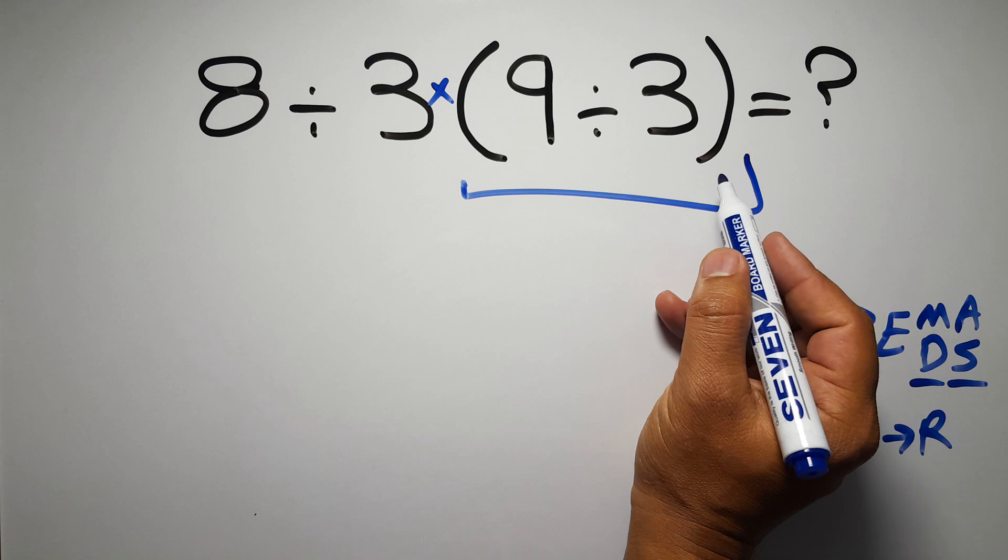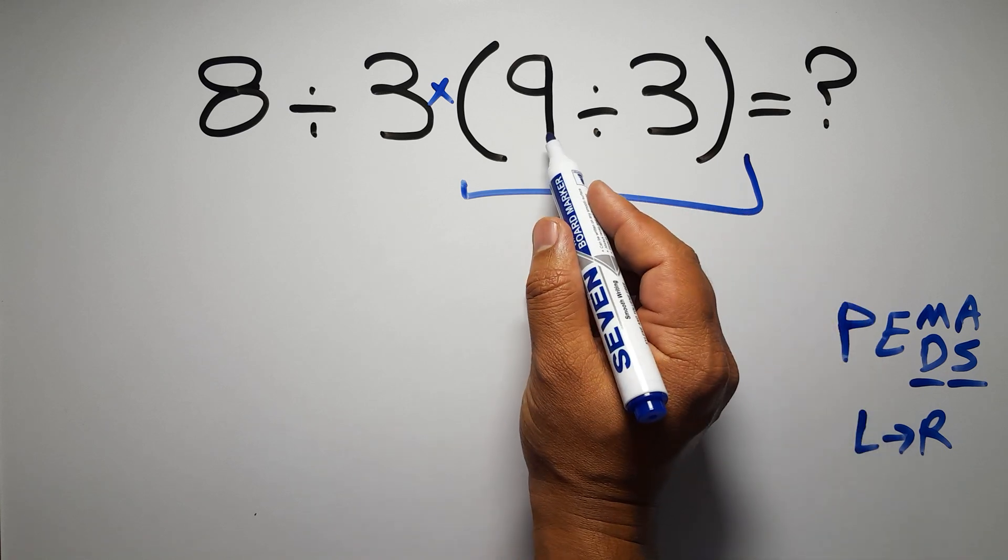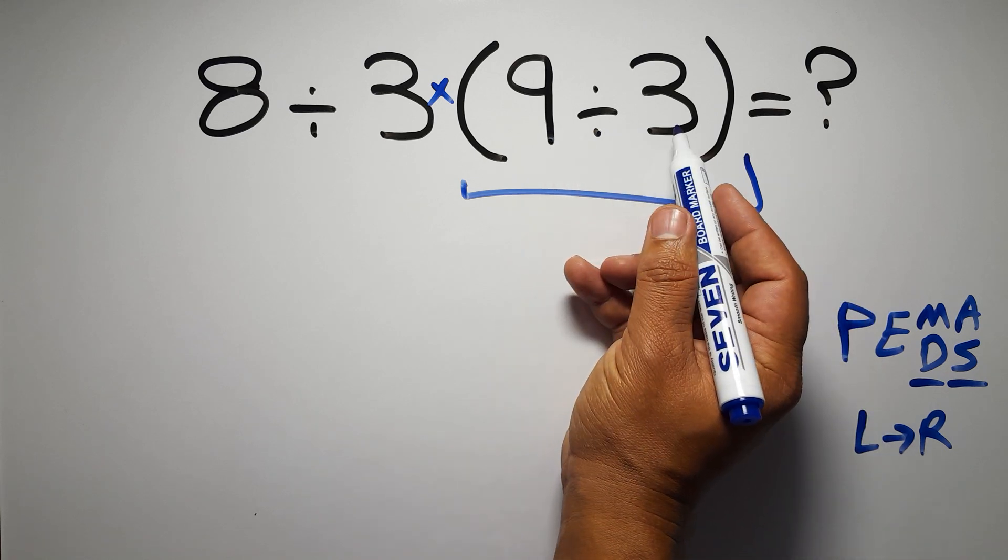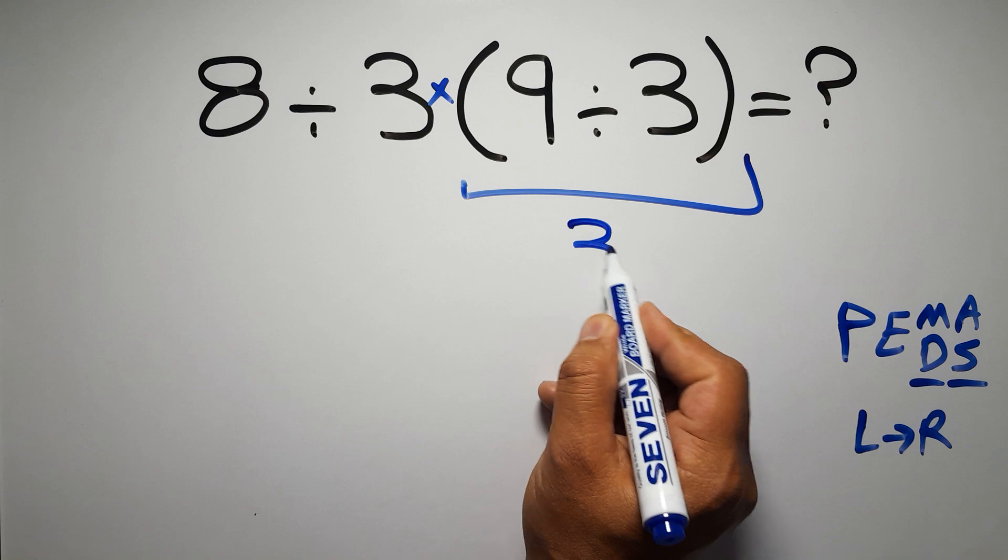So first, these parentheses. Inside these parentheses, we have 9 divided by 3, which equals 3.